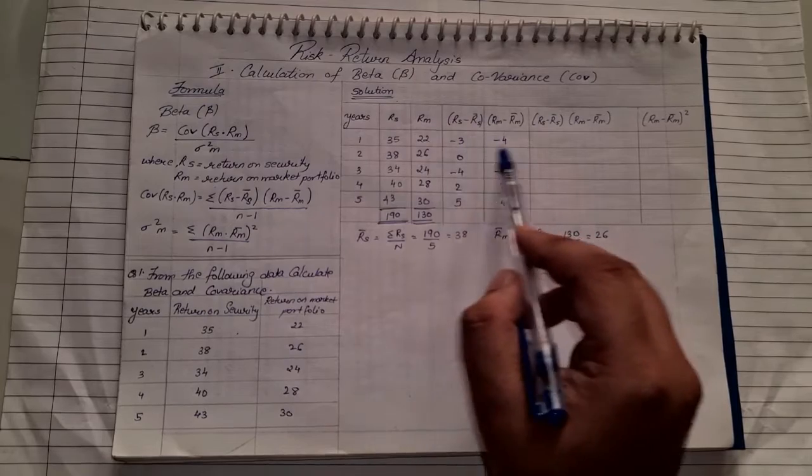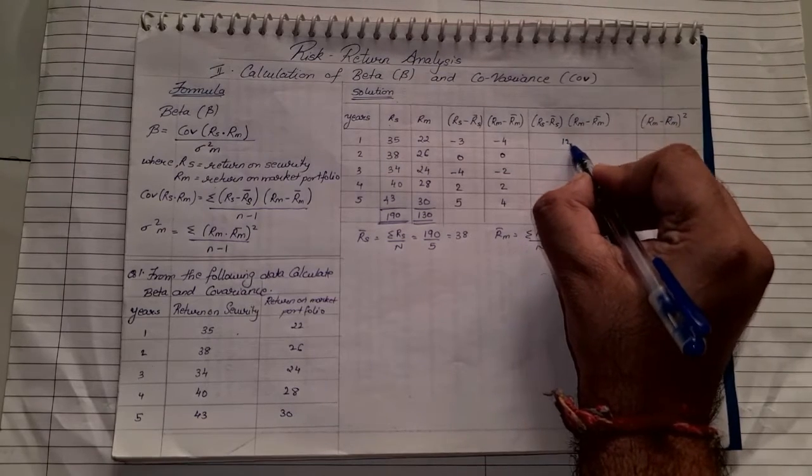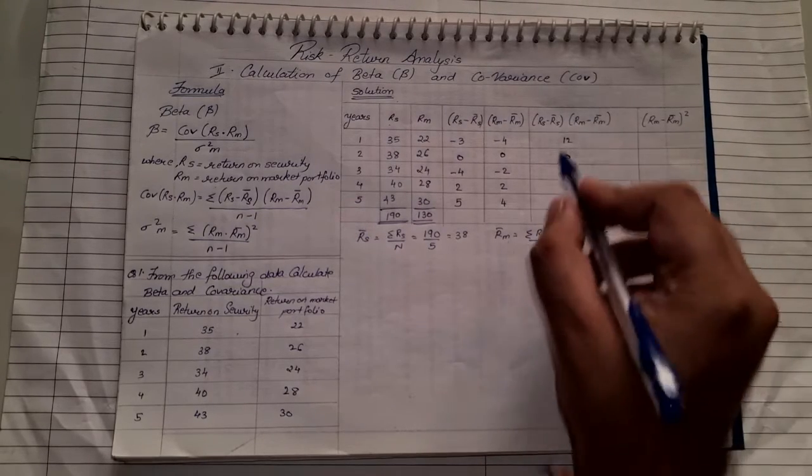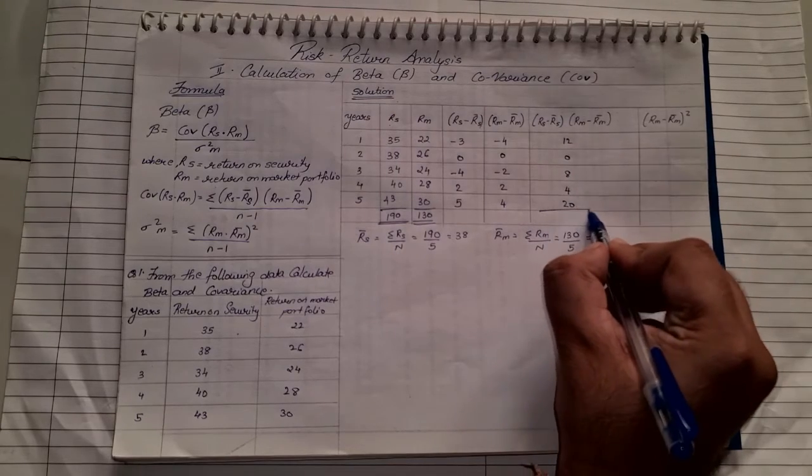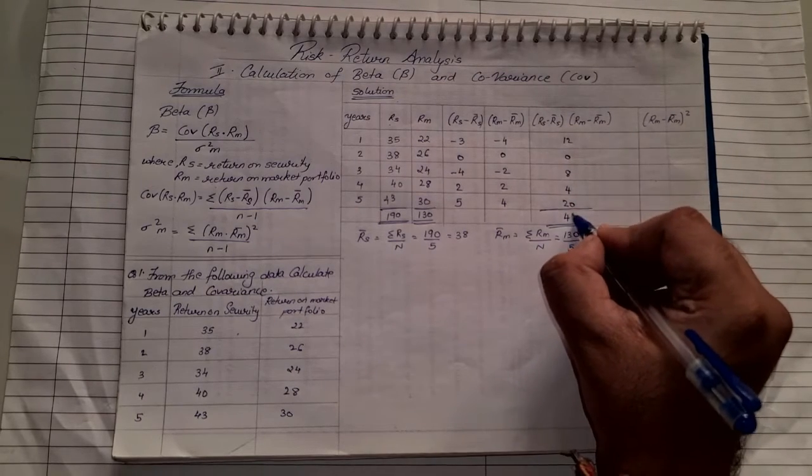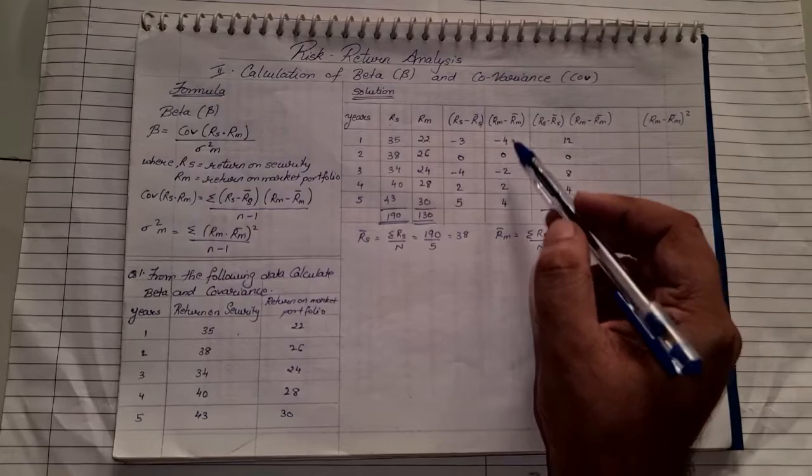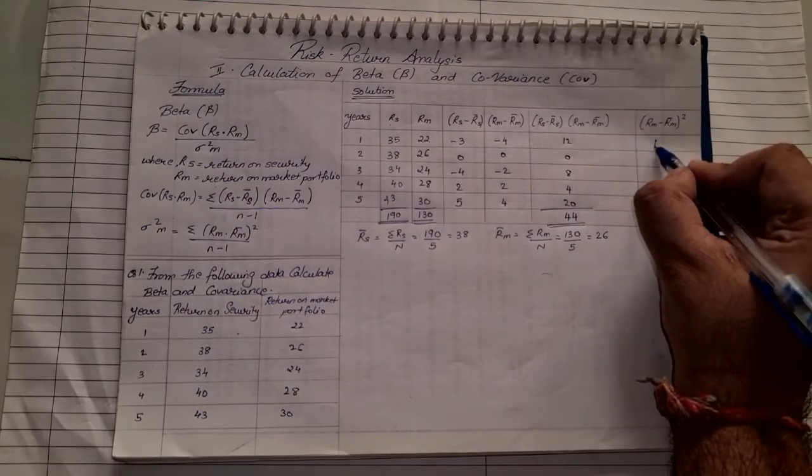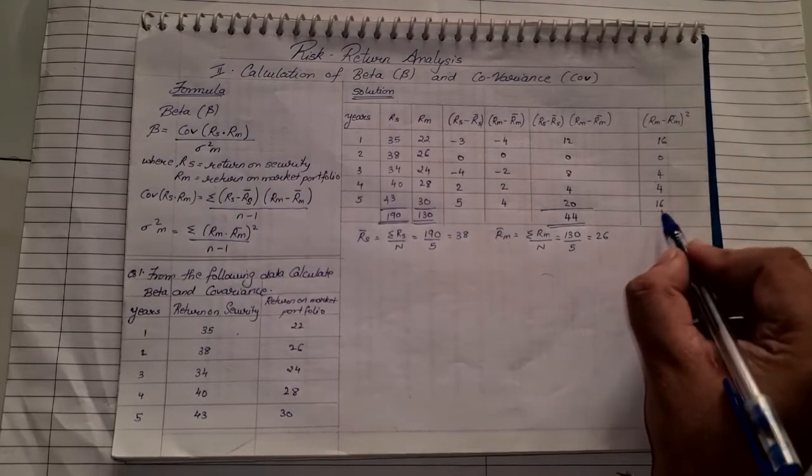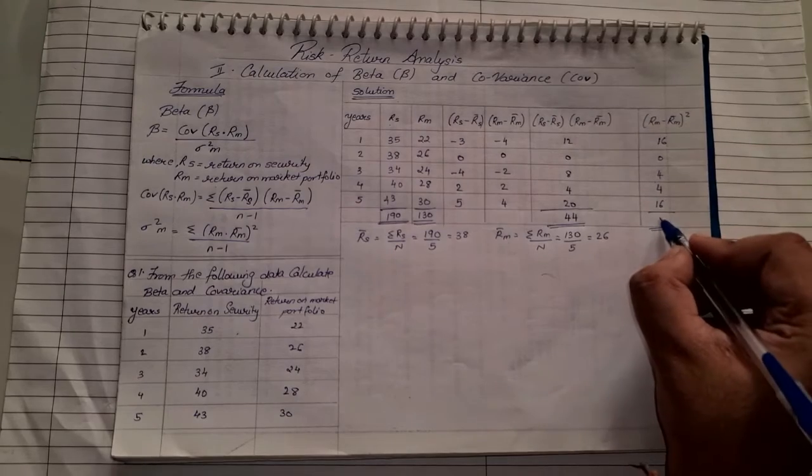The next step is to find the product of the 4th and 5th columns. -3 × -4 = 12, then 0, then positive 8, then 4 × 5 = 20. Once you get the values, total it up: 12 + 8 = 20, plus 4 = 24, plus 20 = 44. Now the last column is (RM - R̄M)², the square of the 5th column: (-4)² = 16, 0² = 0, (-2)² = 4, (2)² = 4, (4)² = 16. Total them up: 16 + 4 = 20, and another 20, so our total is 40.